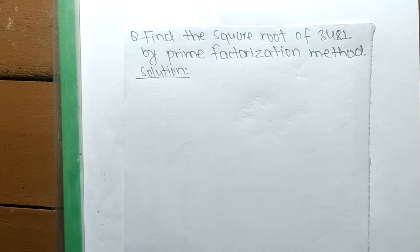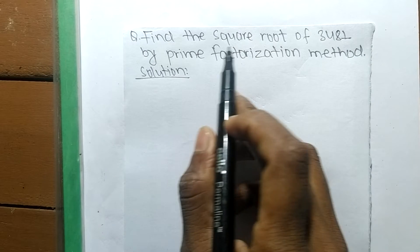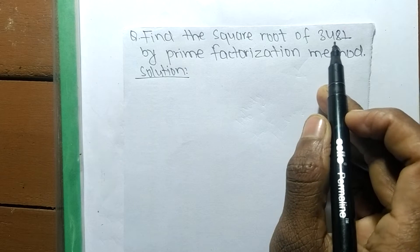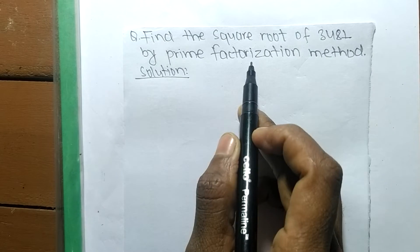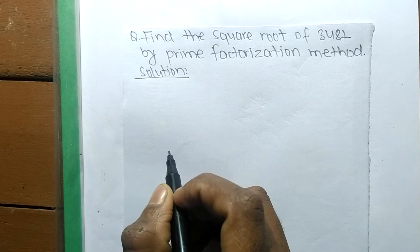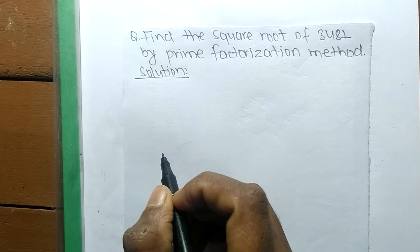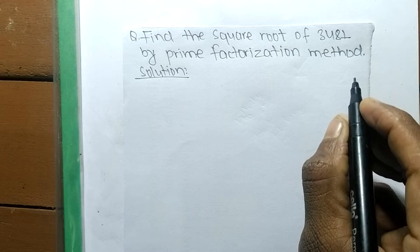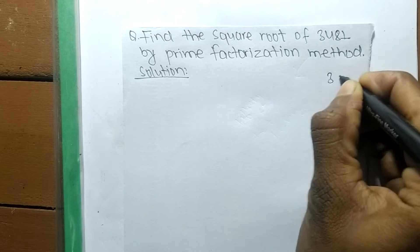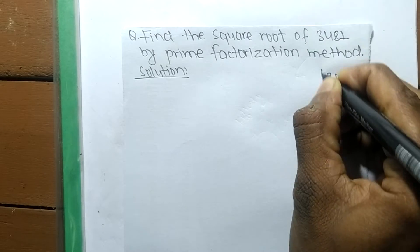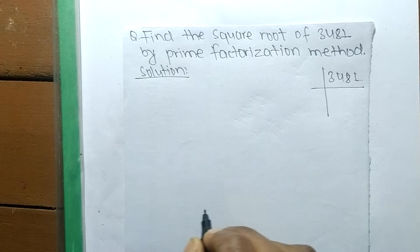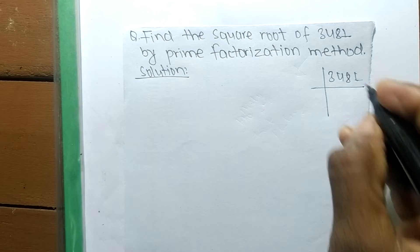So today in this video we shall learn to find the square root of 3481 by prime factorization method. To find out a square root, first we have to find out the prime factors of the given number. So the given number is 3481.